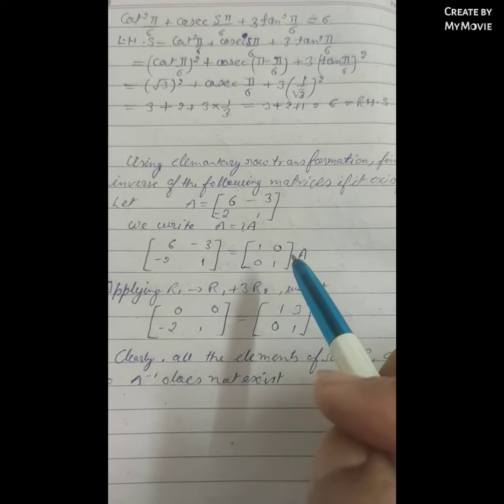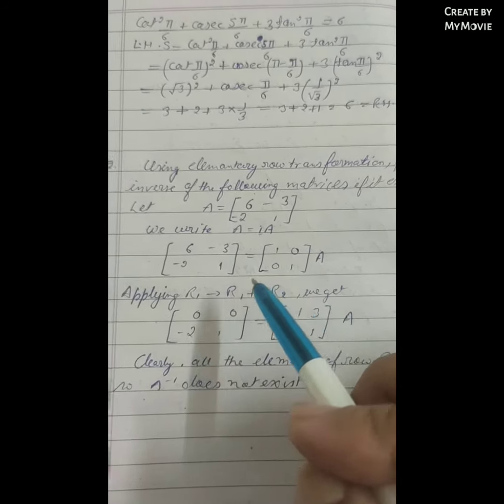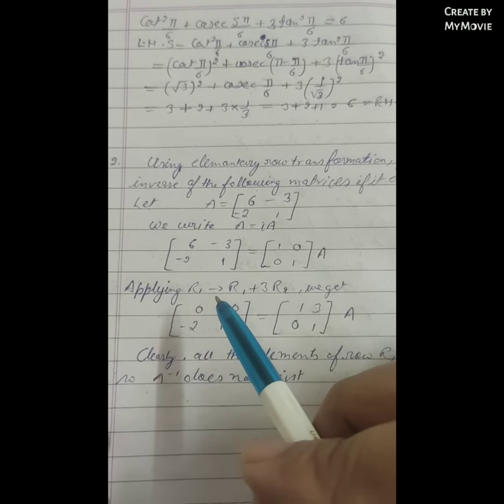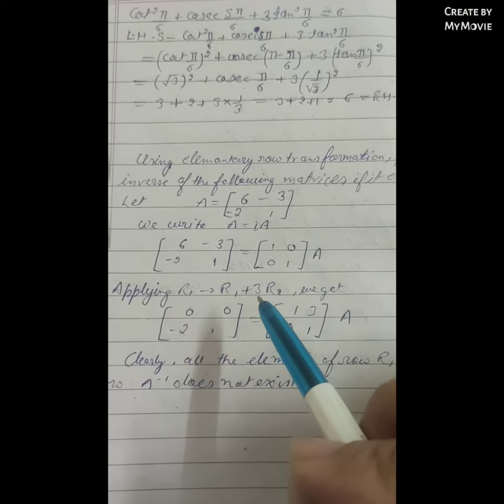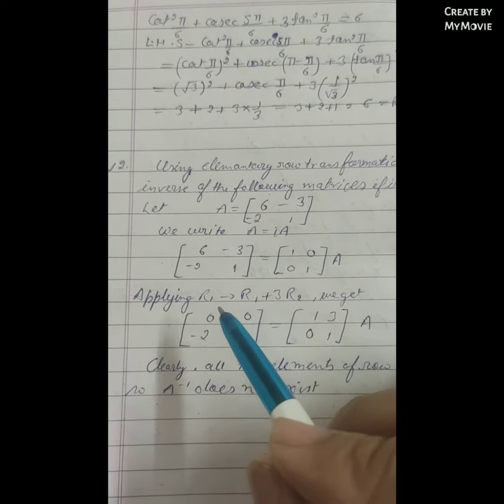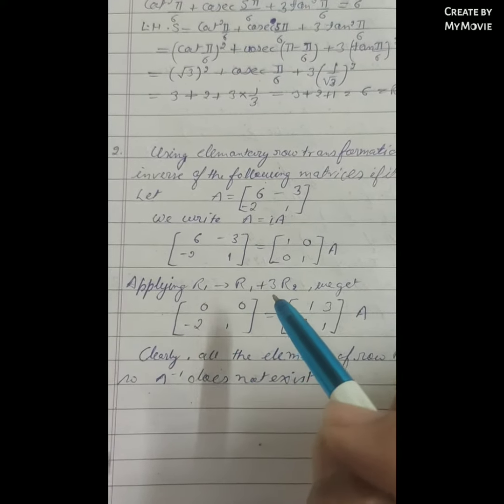This is the identity matrix. Applying row 1 → row 1 plus 3R2, we get R1 plus 3R2...